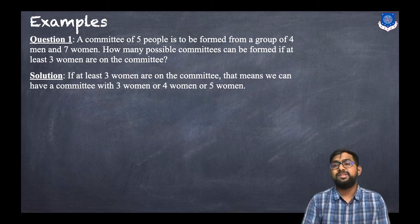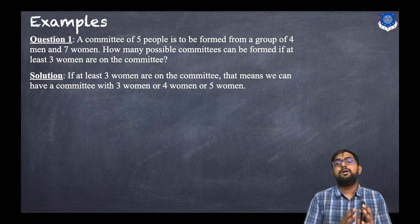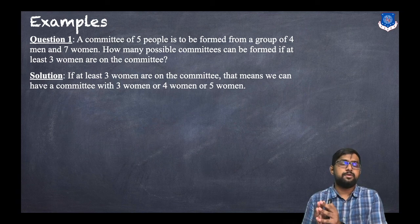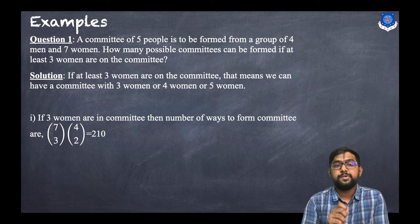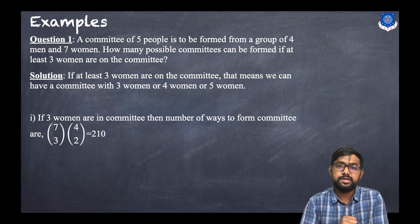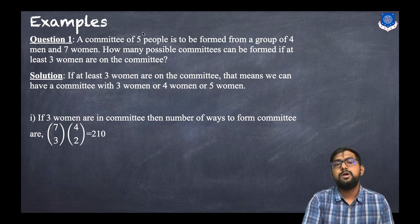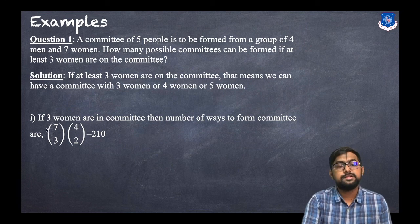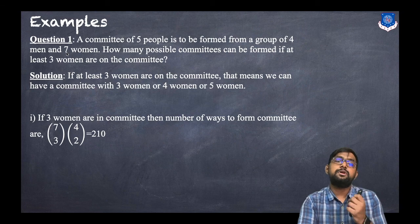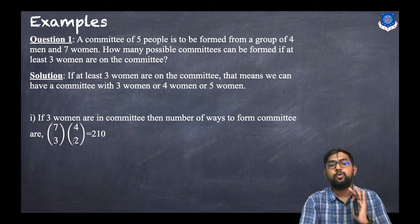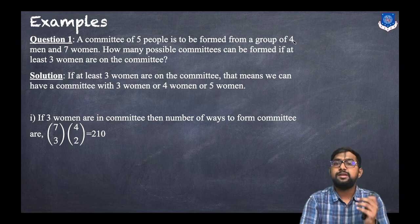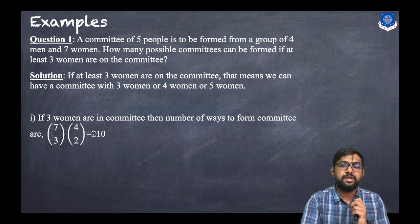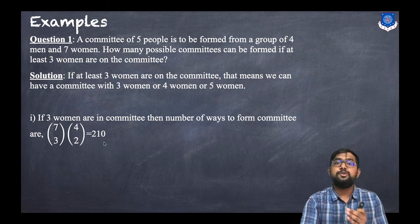Since at least three women are required, we can have three, four, or five women. For the first case — three women in the committee: we select three women from seven, which is 7C3, and the remaining two members come from the four men, giving 4C2. So the number of ways is 7C3 × 4C2, which equals 210.